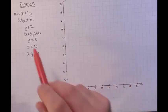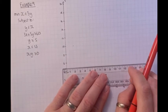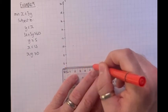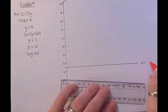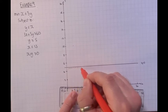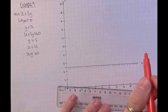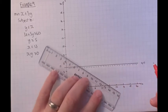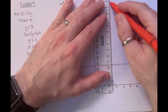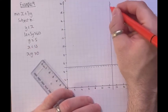The axes are already drawn. First constraint: Y equals 5, which is a horizontal line through 5 on the Y-axis. Y is greater than that, so shade below to indicate the excluded region.